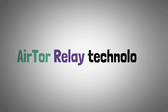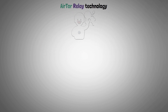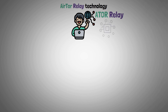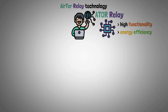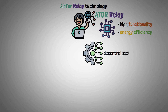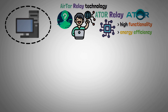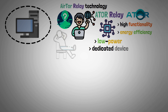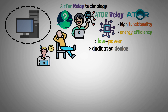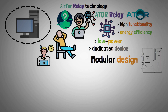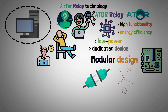Let's look closely at Airtor relay technology. The groundbreaking Airtor relay is presented as a standalone computational device that combines high functionality and energy efficiency. It is made to seamlessly integrate with different decentralized privacy protocols. Users can increase global anonymity and amass Airtor tokens using this relay. Opposite to a typical desktop, the Airtor relay is a low-power, dedicated device with easy configuration even for non-technical people. As a result of the modular design, it will be simpler to add additional networks in the future.